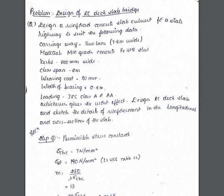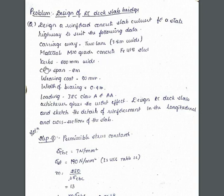Let us now check the problem on design of RC deck slab bridge. This is a lengthy problem and may take two parts. The question: design a reinforced concrete slab culvert for a state highway with the following data — carriageway two lane, 7.5 meter wide; materials M20 grade concrete, Fe415 steel; curbs 600 mm wide; clear span 6 meter; wearing coat 80 mm; width of bearing 0.4 meter; loading IRC Class A or AA, whichever gives the worst effect.